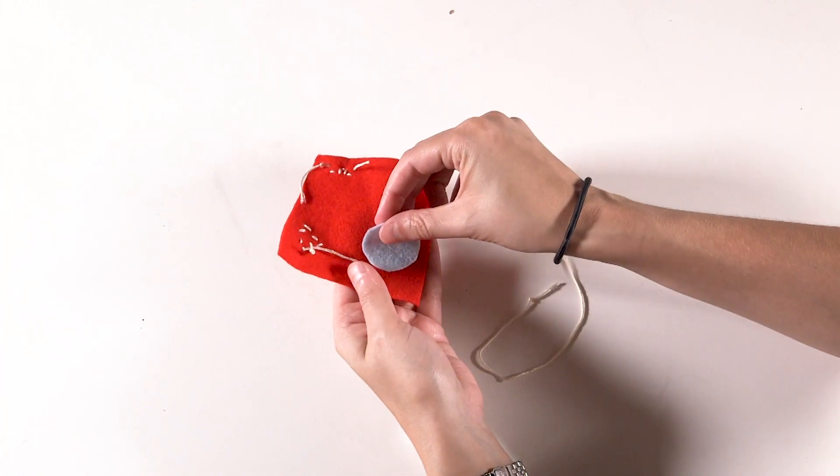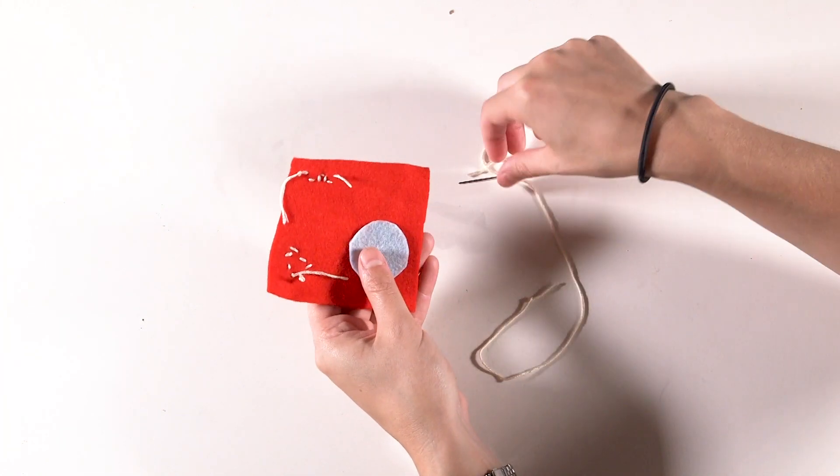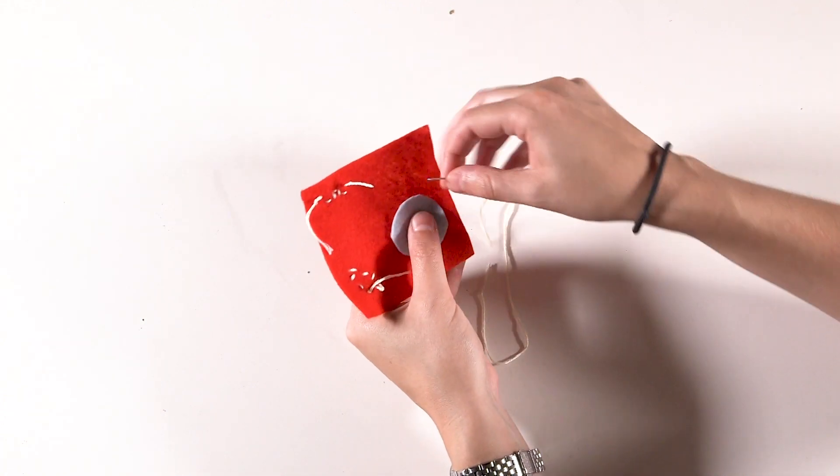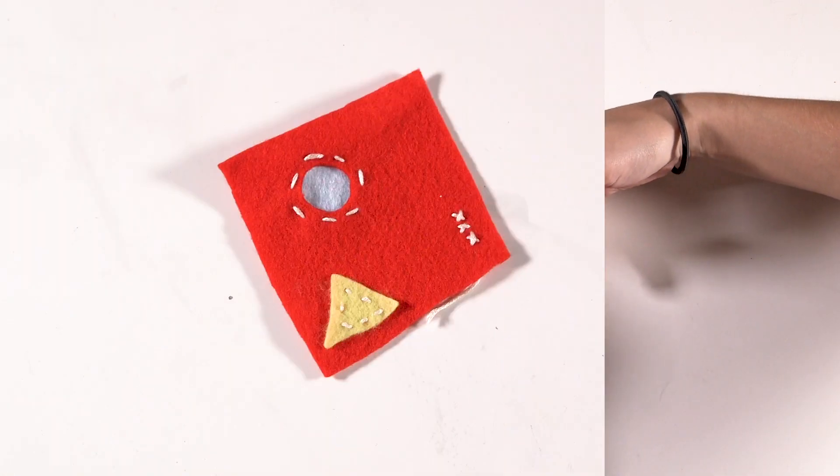Your more able children may want to try reverse applique, placing the patch of fabric underneath the main piece and again, sewing it on using either running or cross stitch, then cutting inside the stitching to reveal the patch below.